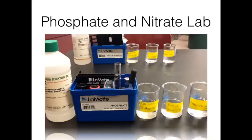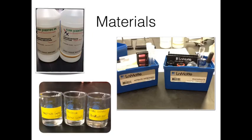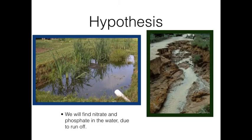For the phosphate and nitrate lab, we will be testing the lake water to see if there are any traces of phosphate or nitrate in the water. The materials used were phosphate, nitrate, beakers, and Lamont testing kits for nitrate and phosphate. Our hypothesis is that we will find nitrate and phosphate in the water due to runoff.